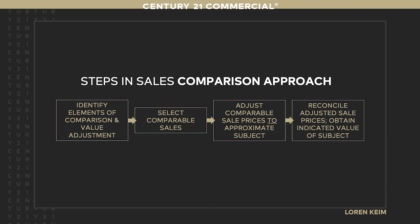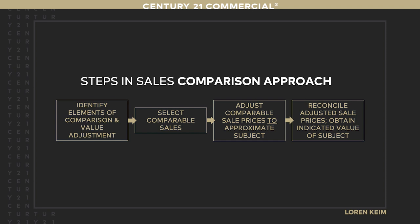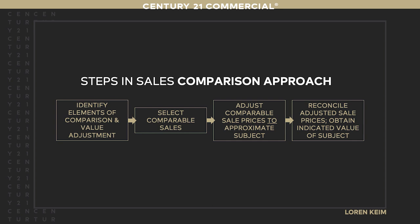The first thing many of you do is start finding comps, but I actually suggest first figuring out what you're going to compare — the elements of comparison and value adjustment. In commercial, we're looking at the same class, category, and use. We want to figure out what we have, then pick our sales comparables, pull them from multiple places, adjust them like an appraiser would, and reconcile those sale prices to figure out what our property's worth.